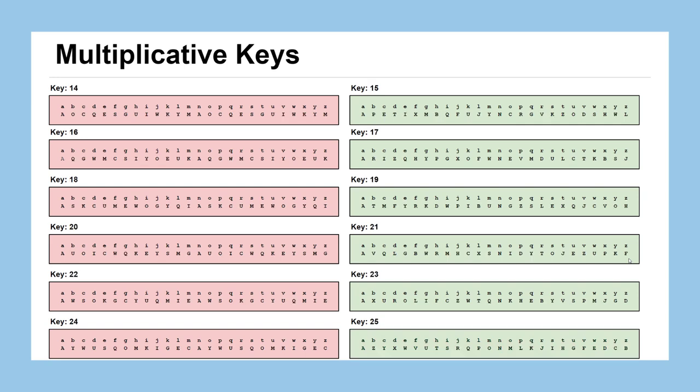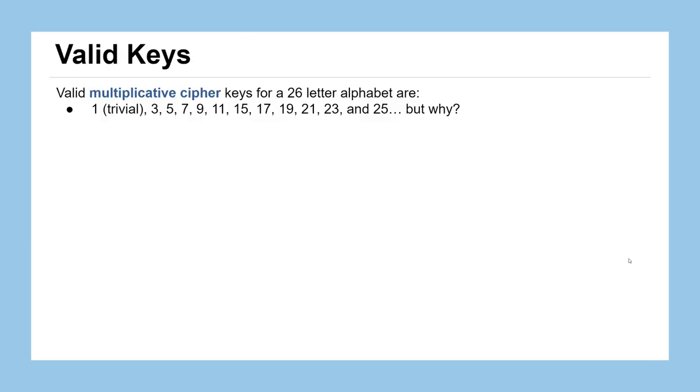So let's dig a little bit deeper. Let's try the remaining values for keys. Key 14, 16, 18, 20, 22, 24 do not work. The remaining odd ones do. So we're able to figure out here that for the valid multiplicative ciphers, keys for a 26 letter alphabet that are valid are 1, 3, 5, 7, 9, not 13, 15, 17, 19, 21, 23, and 25. What we don't know is why those are valid keys. Take a moment and think about what works with these numbers or what properties do these numbers have, and what properties did the keys that didn't work have?